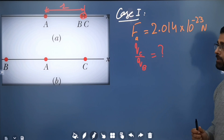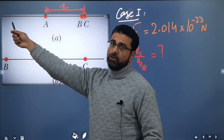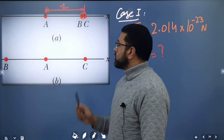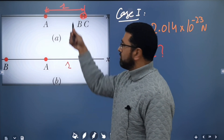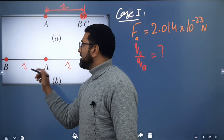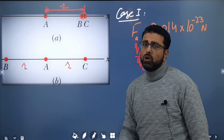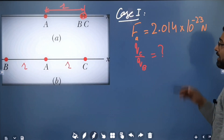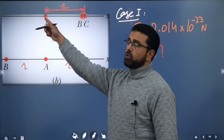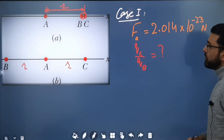A will experience two forces from B and C. In the next case, we take particle B and shift it to the other side of A, again at the same distance r. The net force on A is 2.877 × 10⁻²⁴ in the negative direction of the x-axis in both cases.